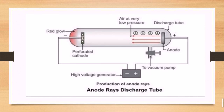He used the same setup for the discovery of the proton. He was using a high voltage battery connected to two electrodes placed inside a glass discharge tube, with the positive and negative terminals of the battery connected to the anode and cathode. He used a perforated cathode — the anode plate was a plane plate and the cathode plate was perforated because it was porous.